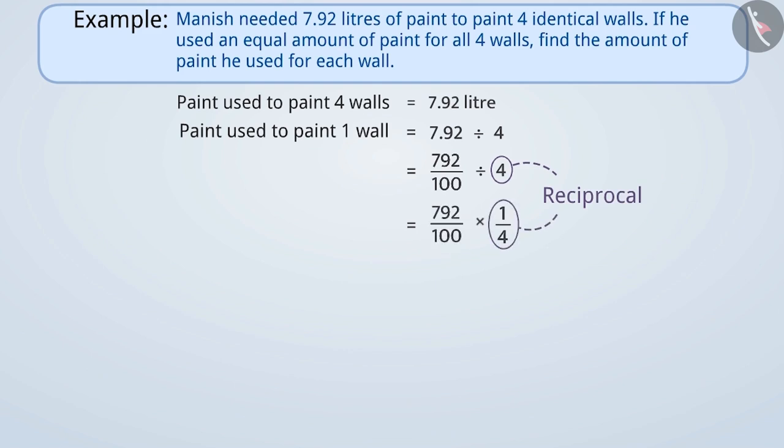792 by 100 into 1 by 4 is equal to 792 into 1 by 100 into 4. We can write this as 1 into 792 by 100 into 4. Can you tell us why we can write 792 into 1 is equal to 1 into 792?